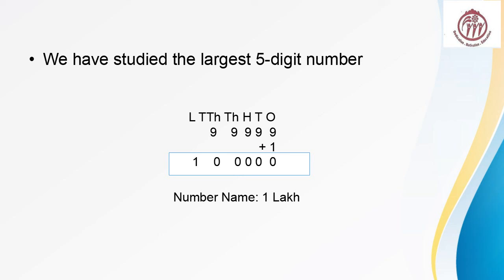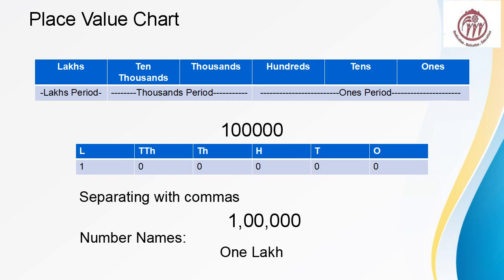After adding, look what you have got: 1 with 5 zeros. This number is 1 lakh, and this is a 6-digit number, the smallest 6-digit number. You can count the digits: 1 and 5 zeros. This is 1 lakh.